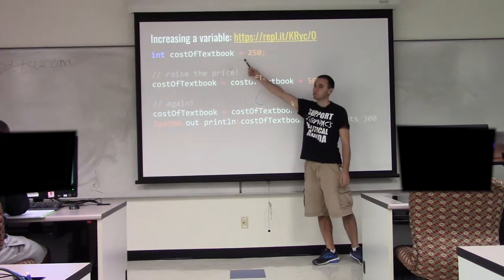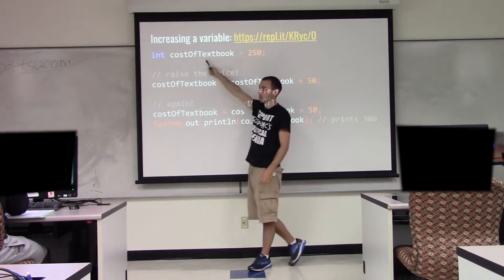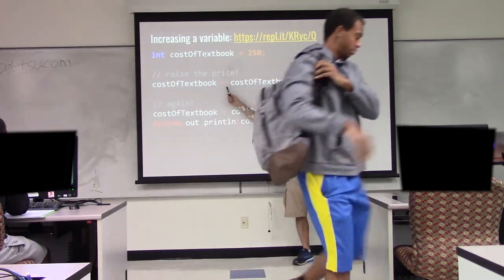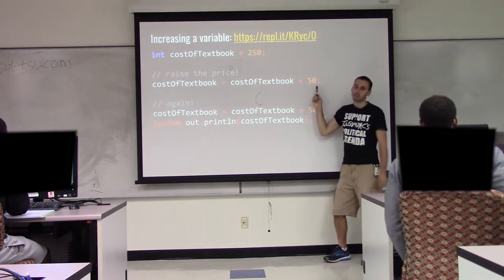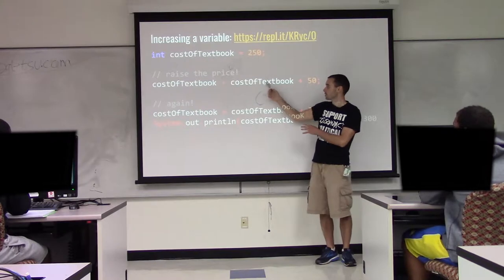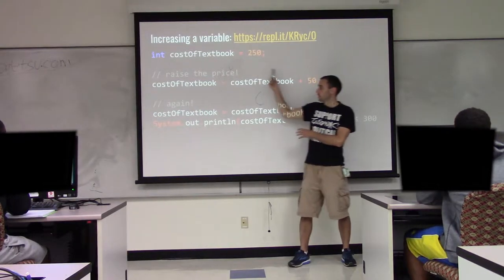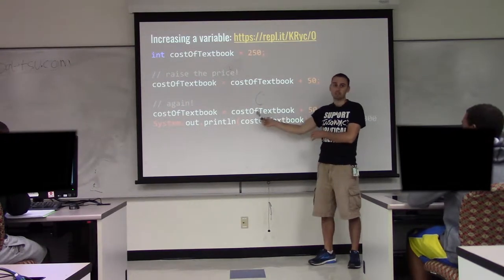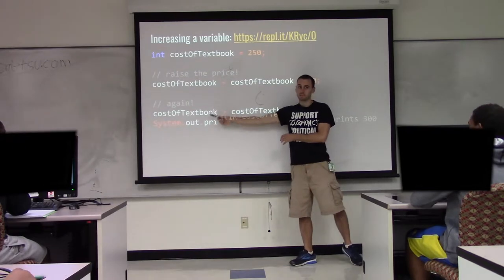As I stressed earlier, this equals is not 'compares equal to' — it's the assignment: take what's on the right and store it in what's on the left. That matters because if this were a mathematical equals, this second line wouldn't make any sense. What I'm saying here is to raise the price by 50. So this will be 250, then we add 50 to get 300, and then we store it. Coming down again, 300 plus 50 gives us 350.